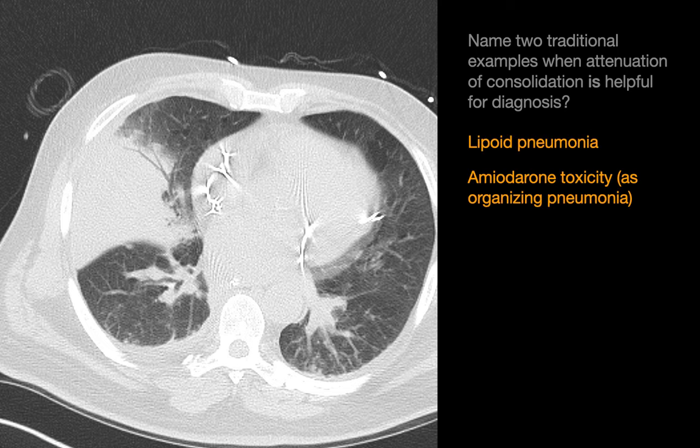Those two examples are lipoid pneumonia and amiodarone toxicity. With lipoid pneumonia, you'll sometimes encounter a region of consolidation that contains macroscopic fat, which is unusual. With amiodarone toxicity, in cases that manifest as organizing pneumonia, you'll see a region of consolidation that looks quite hyperattenuating — almost like it's avidly enhancing — even though you might be looking at a non-contrast CT.